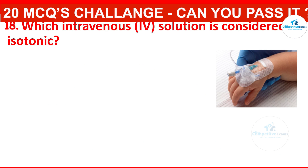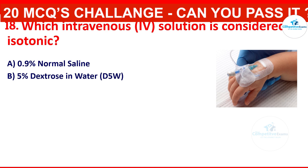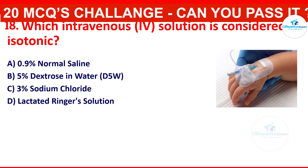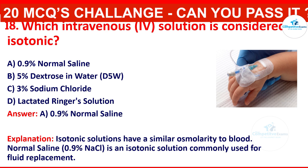Which intravenous (IV) solution is considered isotonic? Your options are: 0.9% normal saline, 5% dextrose in water, 3% sodium chloride, or lactated Ringer's solution. The correct answer is 0.9% normal saline. Isotonic solutions have a similar osmolarity to blood. Normal saline is an isotonic solution commonly used for fluid replacement.